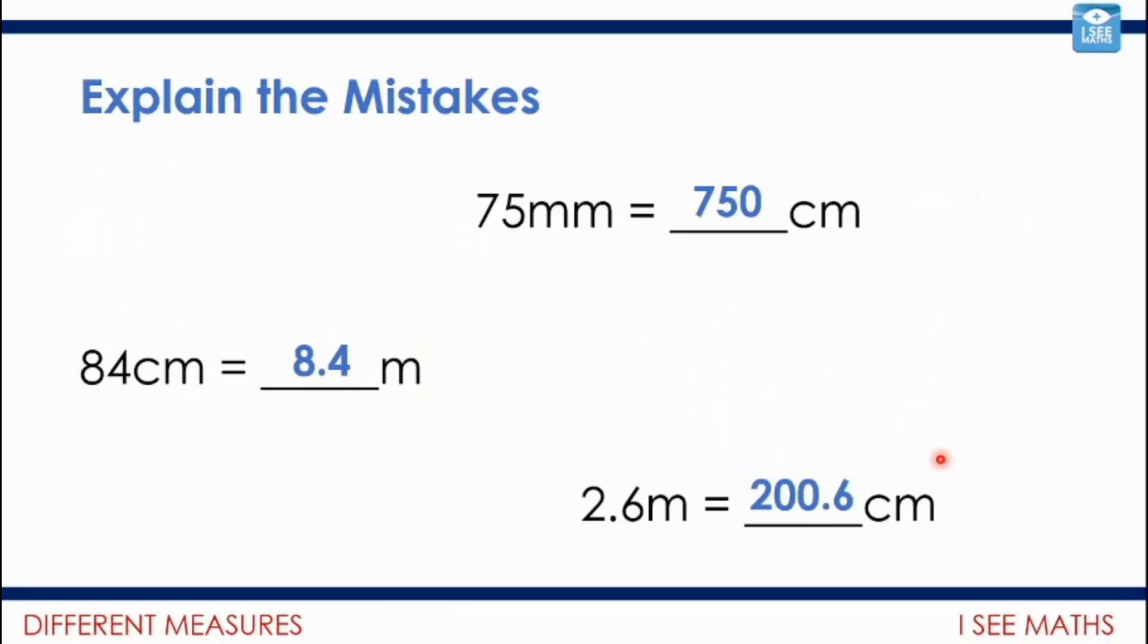Have a look at these examples and see if you can explain the mistakes. The questions are in black and the blue answers are the mistakes. Pause the video. What mistakes have been made in each example? Let's have a look. 75 millimeters—millimeters are smaller and centimeters are bigger, so there won't be as many centimeters. Rather than multiplying by 10, I'd need to divide by 10 to get 7.5 centimeters. 84 centimeters, how many meters? If 100 centimeters equals a meter, 84 centimeters must be 0.84 meters. 2.6 meters—I often see this mistake. We've multiplied the 2 by 100, but the 6 hasn't moved as well. It would actually be 260 centimeters.